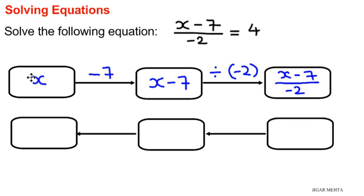So x minus 7 divided by negative 2 equals 4. In the next phase it's divided by negative 2.